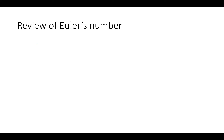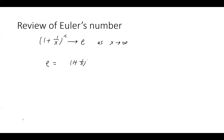The Euler number e is defined as (1 + 1/x)^x, which approaches e as x goes to infinity. We also have a shorthand expression using limit notation: e equals the limit as x goes to infinity of (1 + 1/x)^x. This shorthand notation is very useful, so just get used to it.